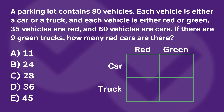Now we have some information, starting with 80 vehicles. We're going to place that on the outside of the square with a little circle around it. It says 35 vehicles are red, so outside the square below the red column I'll put 35. Then it says 60 vehicles are cars, so I'll put 60 to the right outside the car row. Finally, there are nine green trucks, so I'll place that number inside the square where it intersects trucks and green.